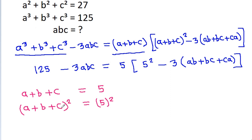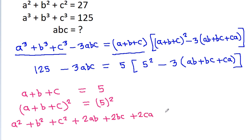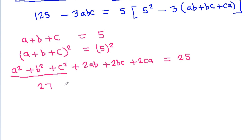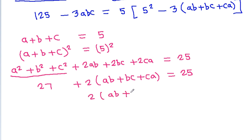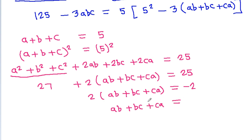And a plus b plus c whole square is a square plus b square plus c square plus 2ab plus 2bc plus 2ca is equal to 25. And a square plus b square plus c square is 27, so 2 times ab plus bc plus ca is equal to 25 minus 27 is minus 2. So, ab plus bc plus ca will be equal to minus 2 by 2, which is minus 1.